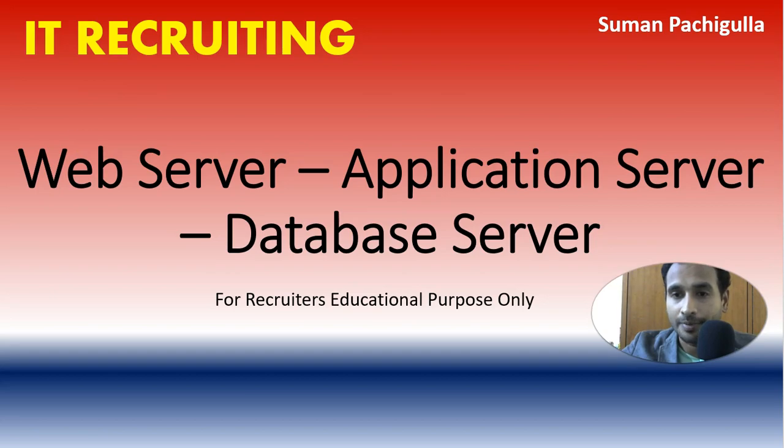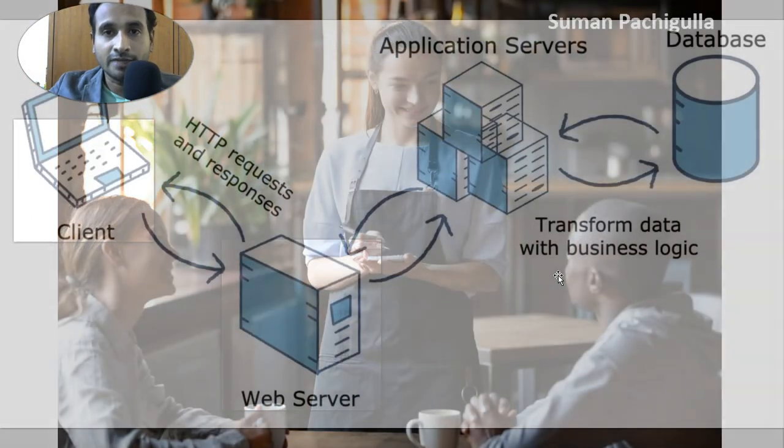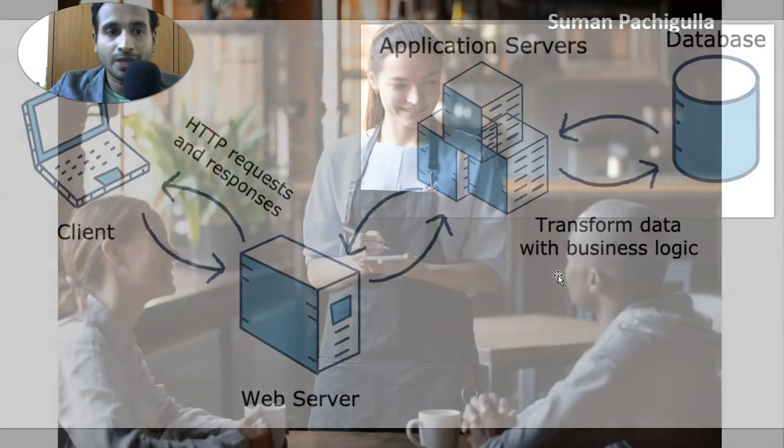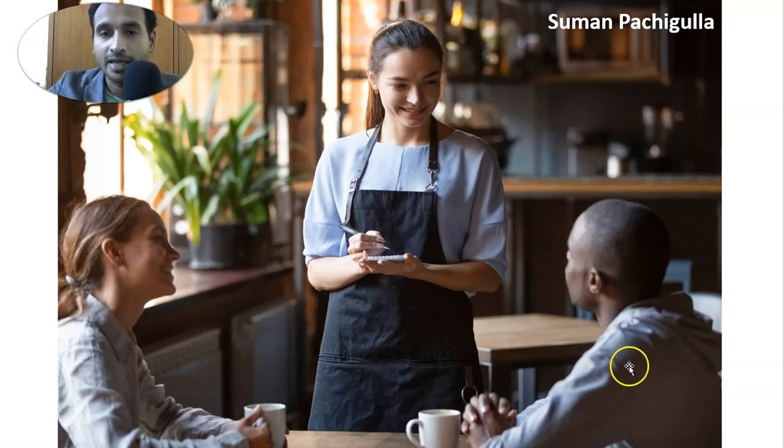To understand how web server, application server, and database servers are connected, I'm going to show you a very simple example. Let's take the example of a hotel. You went to a hotel and you order something. There will be a client, a web server, an application server, and database servers. You are the customer — you went to the hotel and you connect with the server, whoever serves you food.